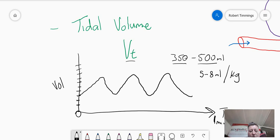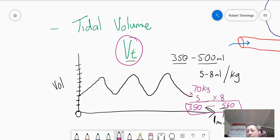So you can imagine that if you were a 70 kilo person, you multiply that by 5, you're going to come out to 350 mils. That's going to be your normal sort of bottom edge of your tidal volume, up to 8 at 70 kilos. So 7 times 8 is 560. There you can see is what your normal tidal volume range would be expected to be for your weight.